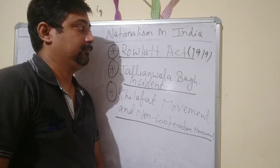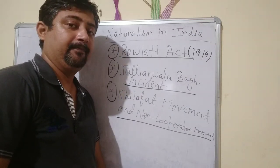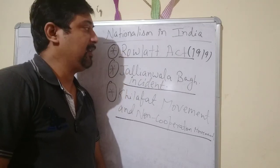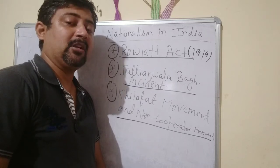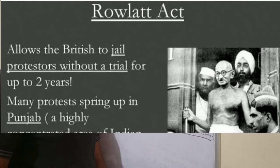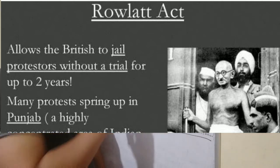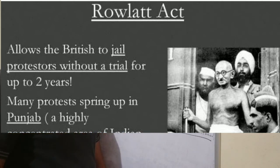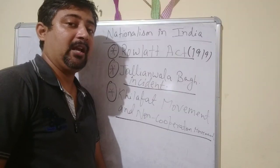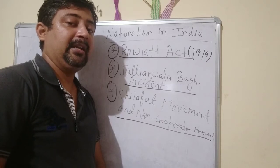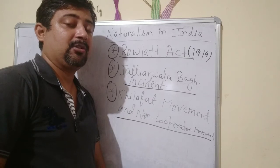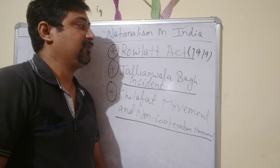Let us start with the Rowlatt Act of 1919. The British government passed this law, which was termed the Black Act by Indians. This act was passed to demoralize and punish Indians without reason, particularly those involved in political activities. As per this act, if any Indian was found involved in any suspicious activity, he would be jailed for two years with no trial — he could not hire or contact his advocate or approach any other court.